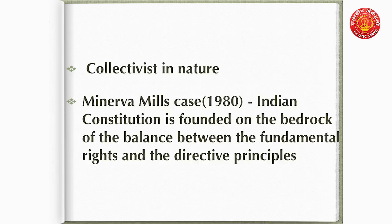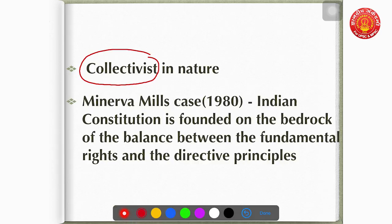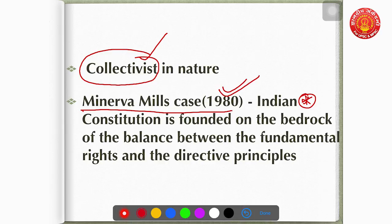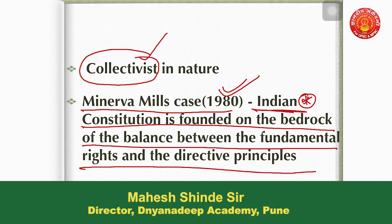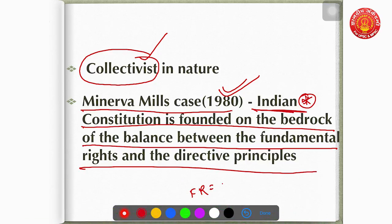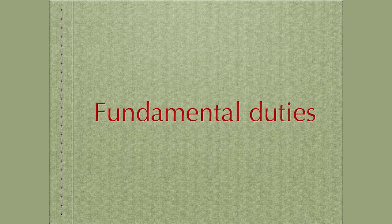DPSPs are collectivist in nature — they try to promote the collective benefits of the society. One important point for quality mains answers is the Minerva Mills Case of 1980. The Minerva Mills Case says that the Indian Constitution is founded on the bedrock of the balance between Fundamental Rights and DPSPs — that is, Fundamental Rights are in balance with DPSPs.